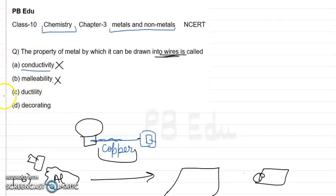Therefore, our correct option is option C. The property of metal by which it can be drawn into wires is called ductility.